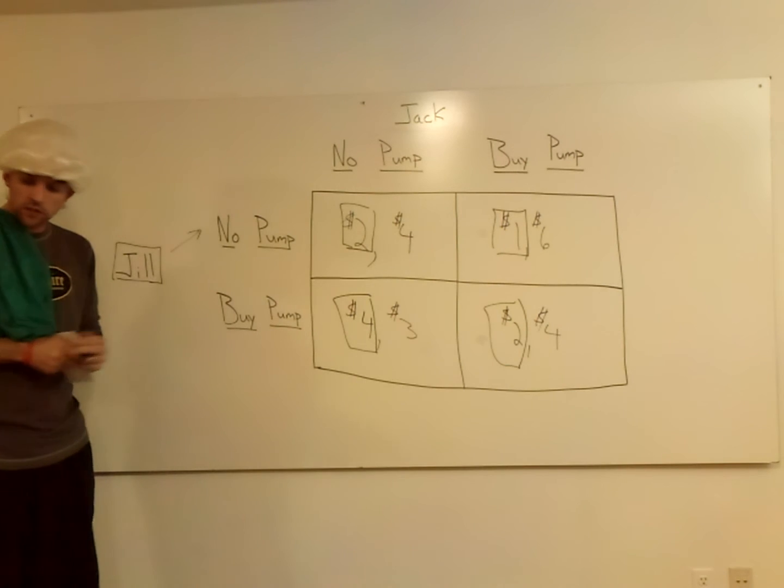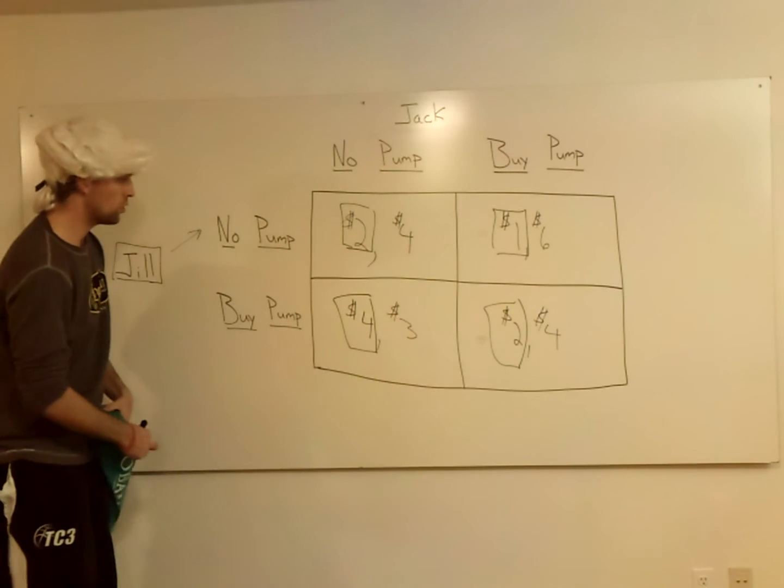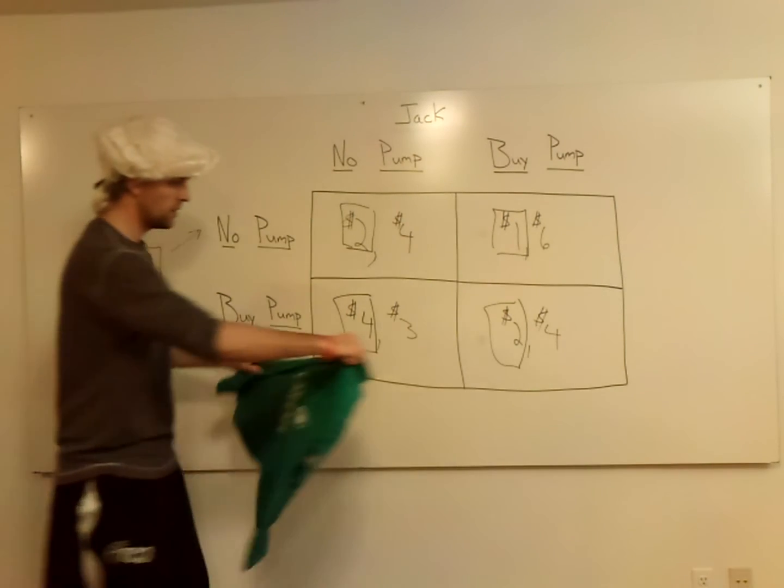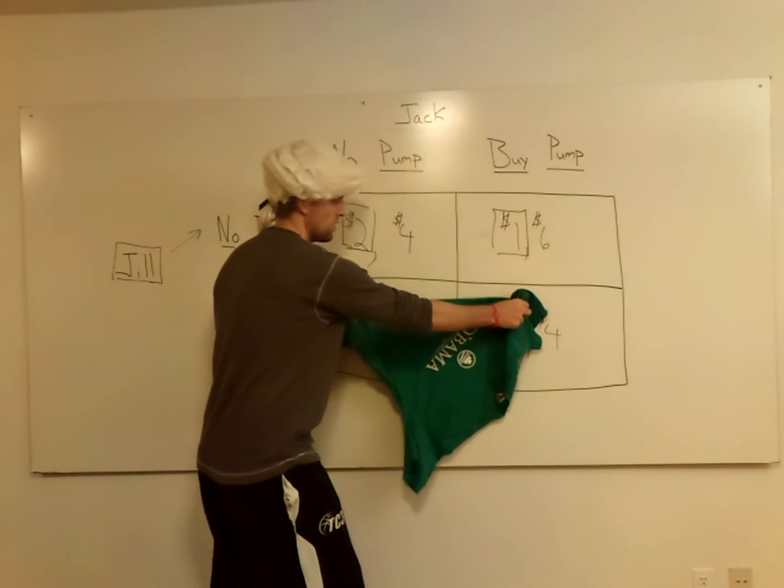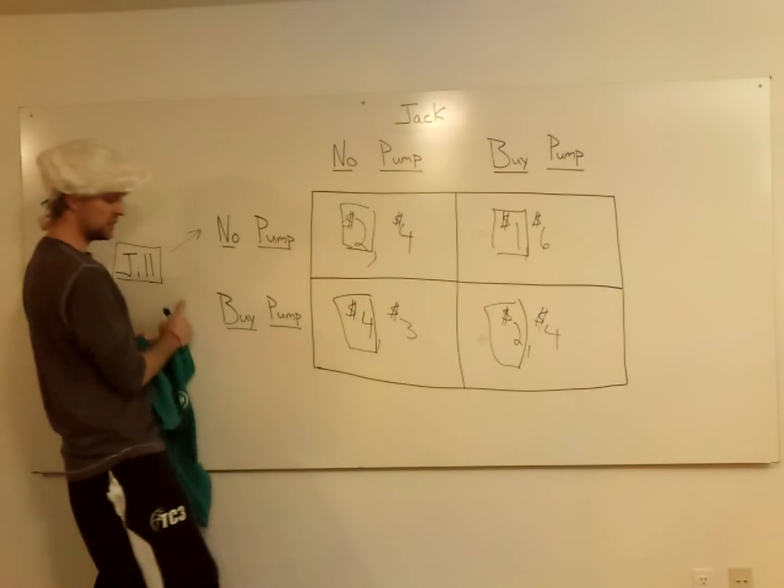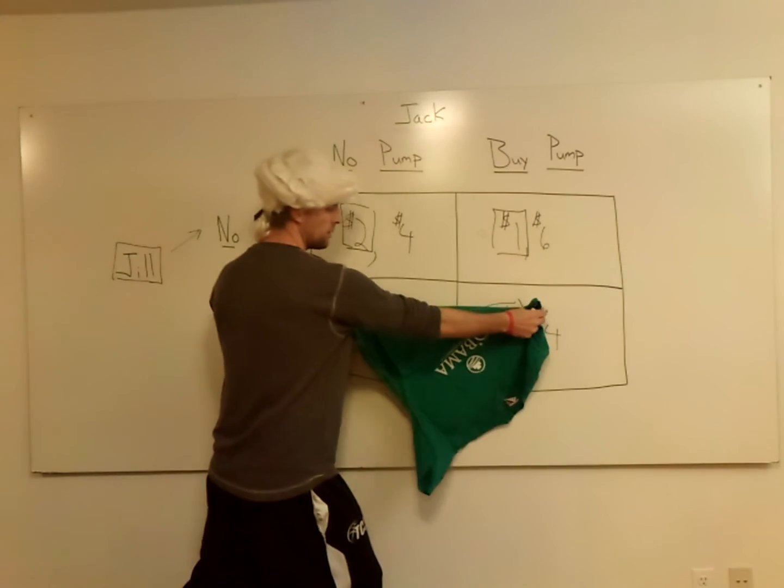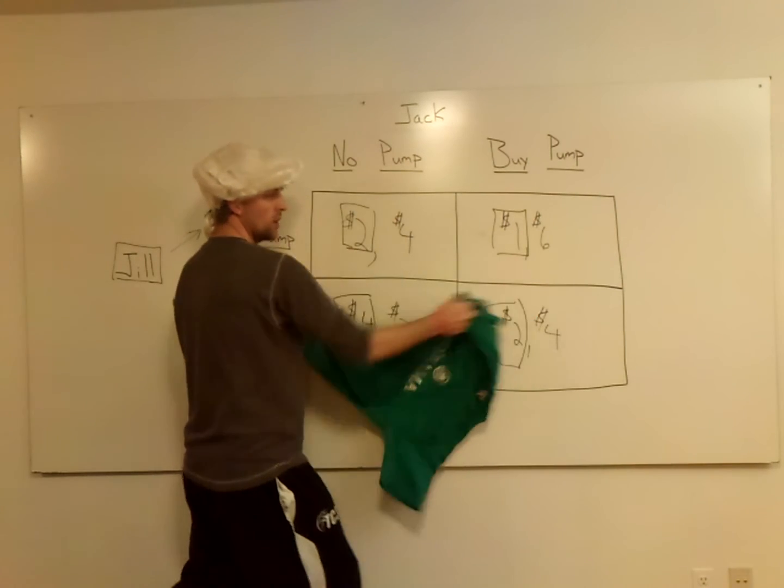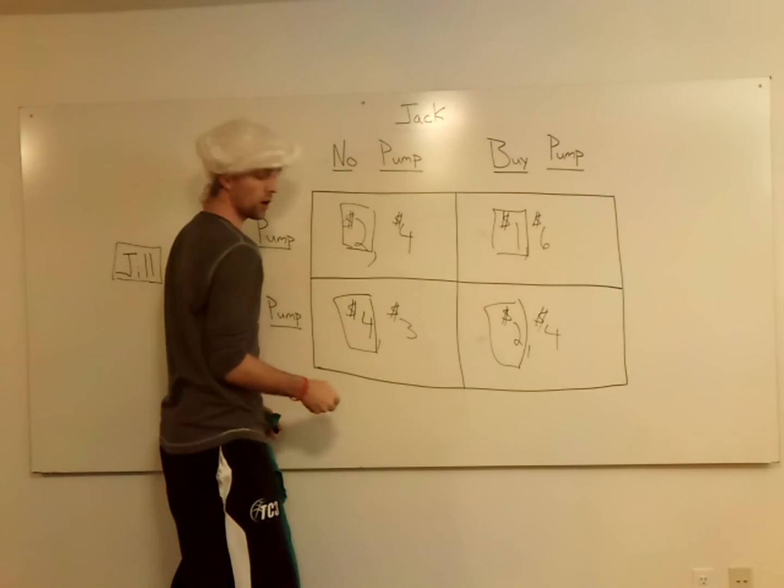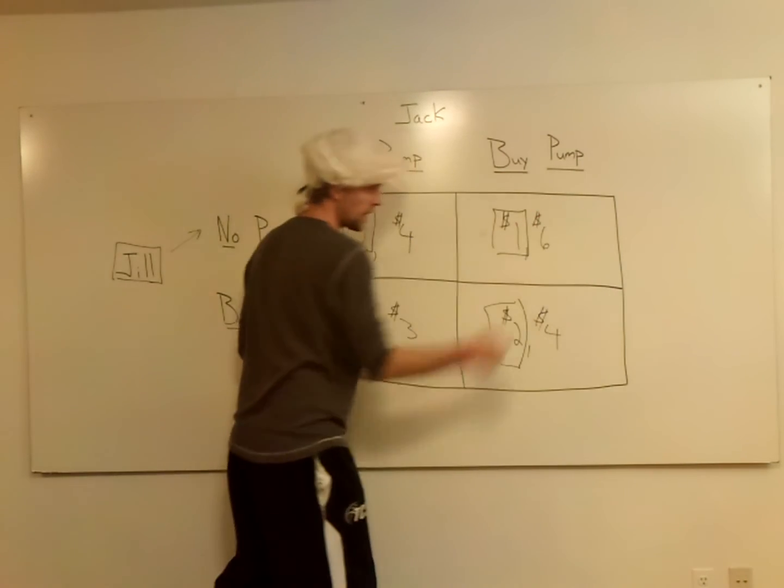Well, here's how you do this. So Jill's going no pump. So that means you can automatically ignore everything down here. Because all these boxes down here is if Jill buys the pump. She's not buying the pump. She's going without. So we're up top here. So if you're Jack, you've got two choices. You can go no pump, you can get four. You can buy the pump, you get six.